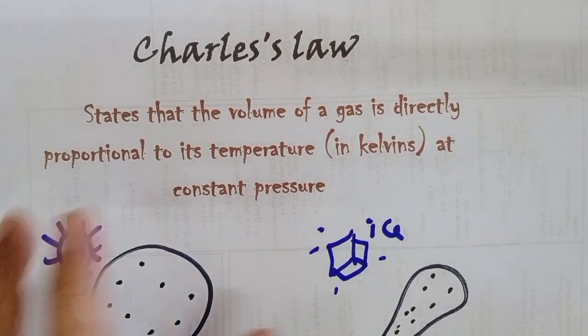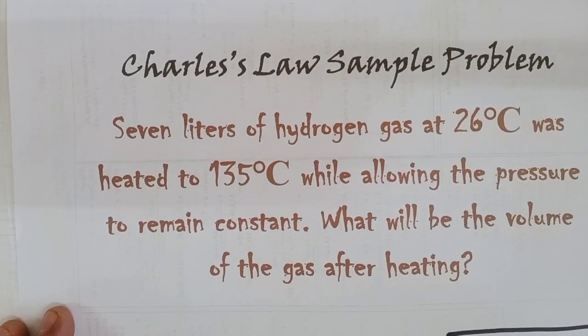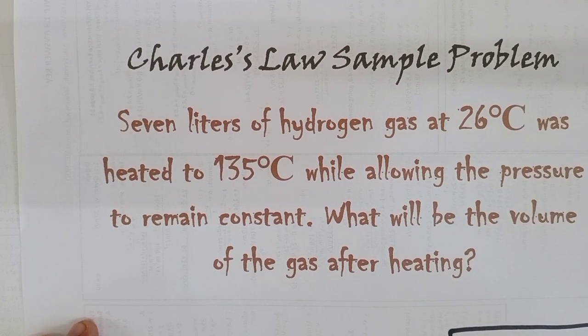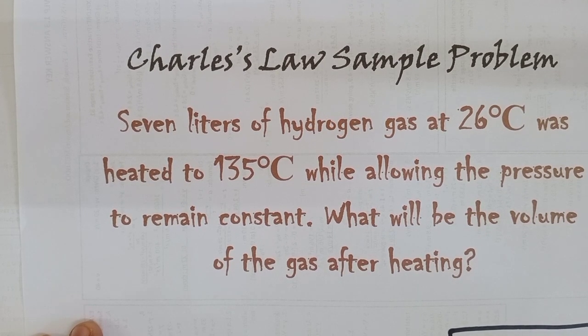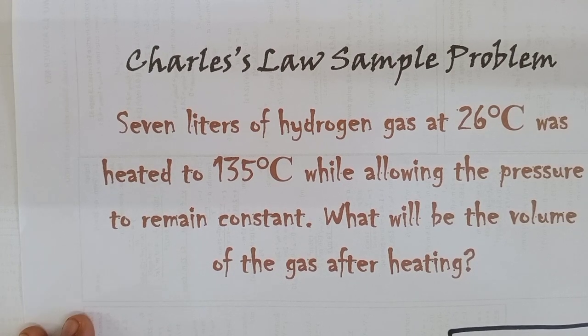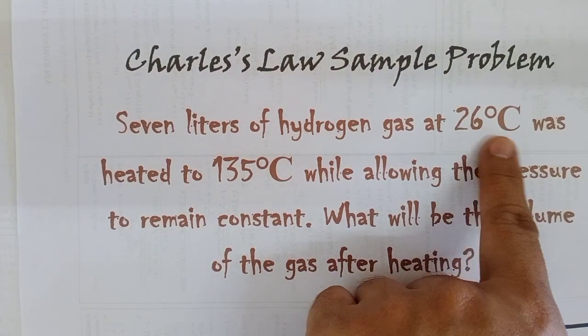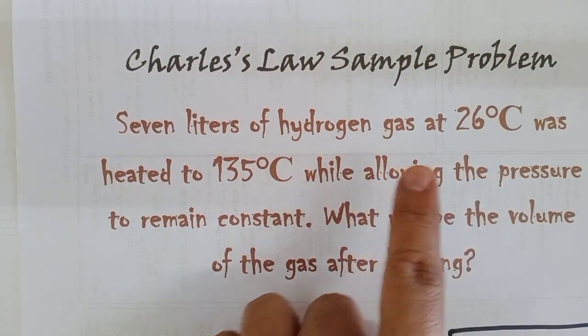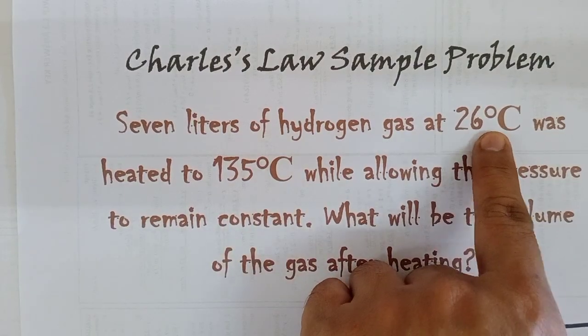To understand the principle, let us have a problem about Charles' Law. Seven liters of hydrogen gas at 26 degrees Celsius was heated to 135 degrees Celsius while allowing the pressure to remain constant. What will be the volume of the gas after heating? Take note: the temperatures are in degrees Celsius, so we always change them to Kelvin.